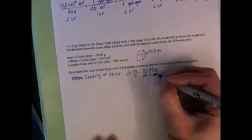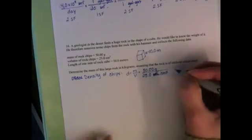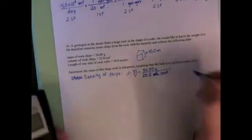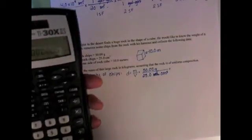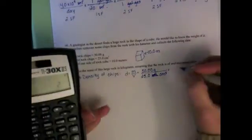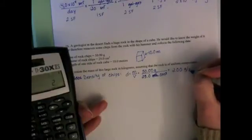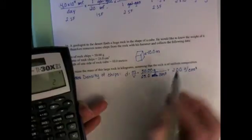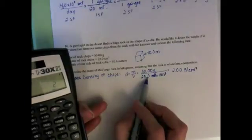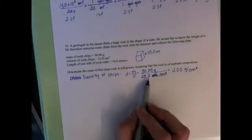Actually it's probably going to be useful for us to leave these units in cubic centimeters and I'll show you why when we get further in the problem. So this is going to be 50 divided by 25, 2.00 grams per cubic centimeter. Keeping three significant figures, which was the smallest number of sig figs in the problem that we were working with.